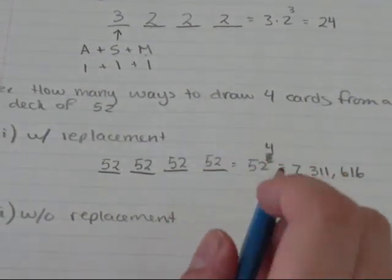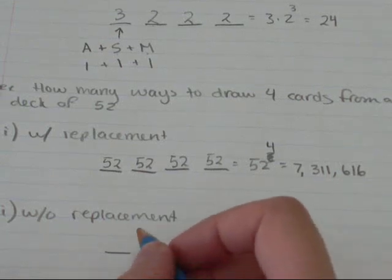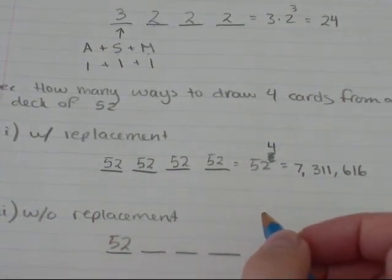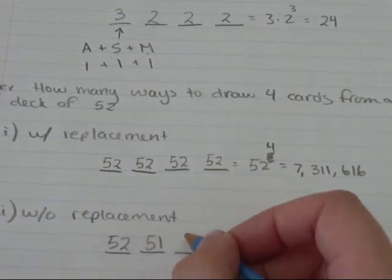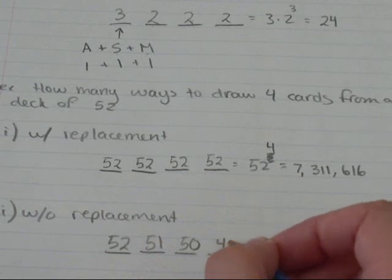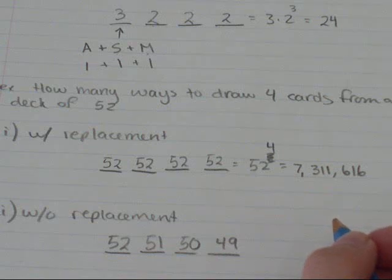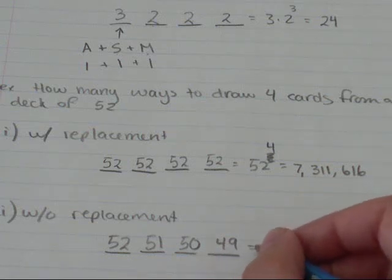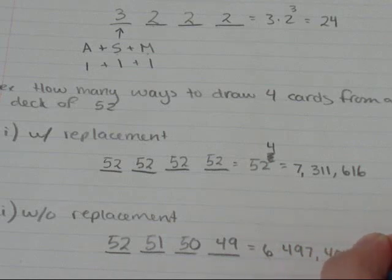So in my second case, I've got without replacement. So I'm drawing four cards. The first time, I have 52 to choose from. Now I've taken out one from the deck when I drew it, so now I have 51, 50, 49. So 52 times 51 times 50 times 49 equals 6,497,400 ways.